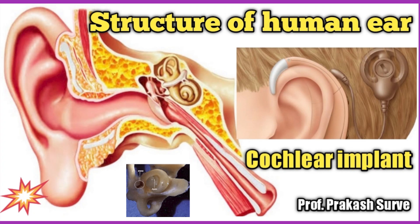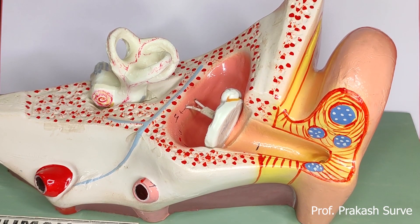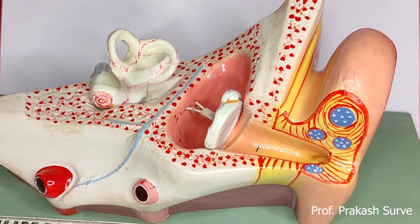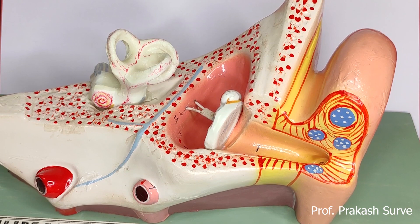Welcome dear student. Today we'll see about the structure of the human ear. First we'll see the structure of the human ear, and at the end of this video we'll see about the cochlear implant. The human ear is an important organ, not only for hearing but also to maintain body equilibrium.